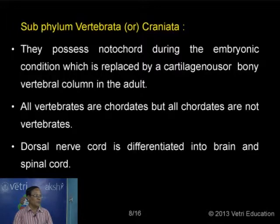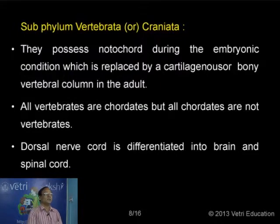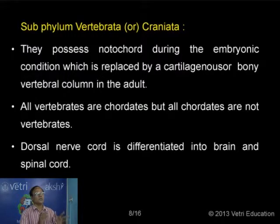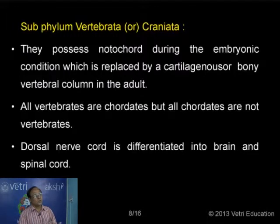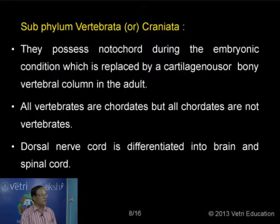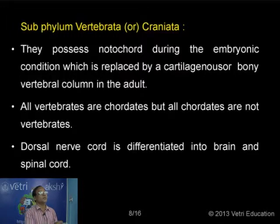In the case of vertebrates, we have the backbone in the form of a vertebral column. There is also a differentiation of skull with a brain box or cranium formed through cephalization. The dorsal nerve cord is differentiated into two: the spinal cord passing through the vertebral column, and the brain. To accommodate the brain, it is a must for the animal to have the cranium or brain box.